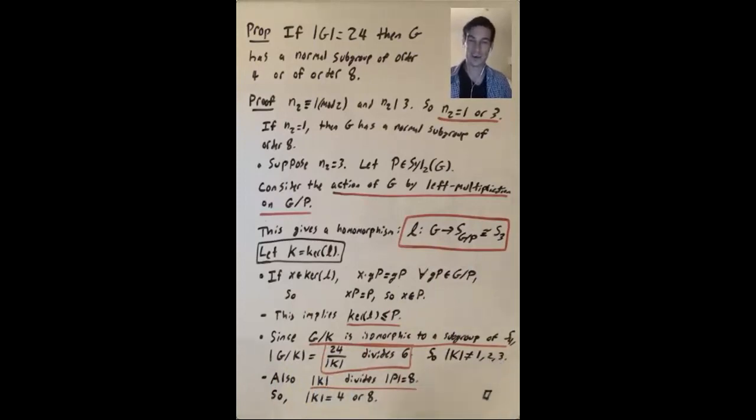So what is it? It's either 4 or it's 8. And now, either way, if it's 4, you get a normal subgroup of order 4. If it's 8, you get a normal subgroup of order 8.